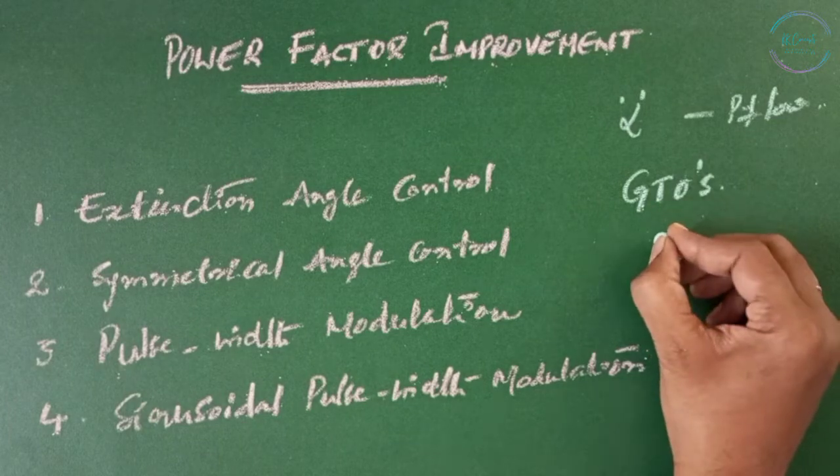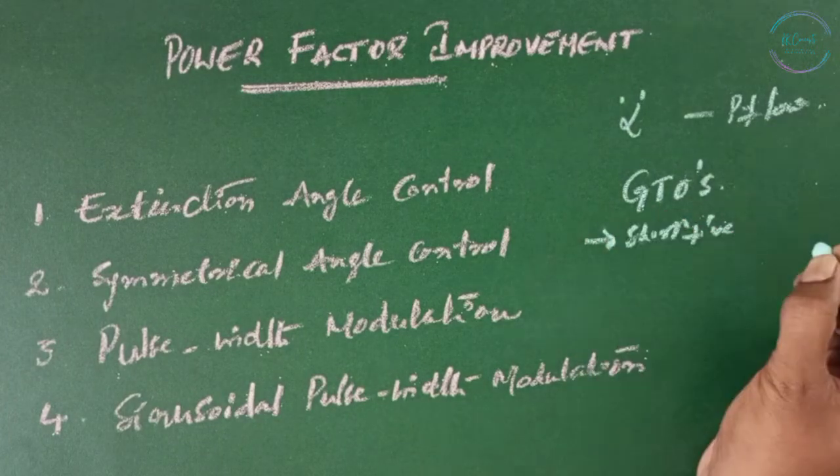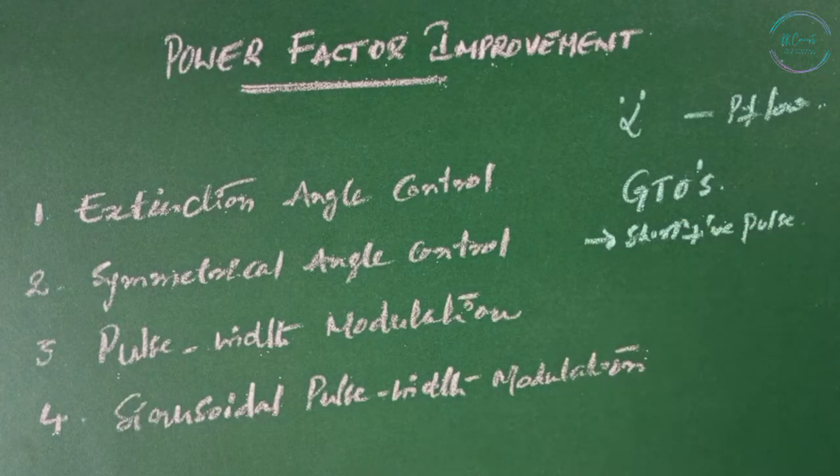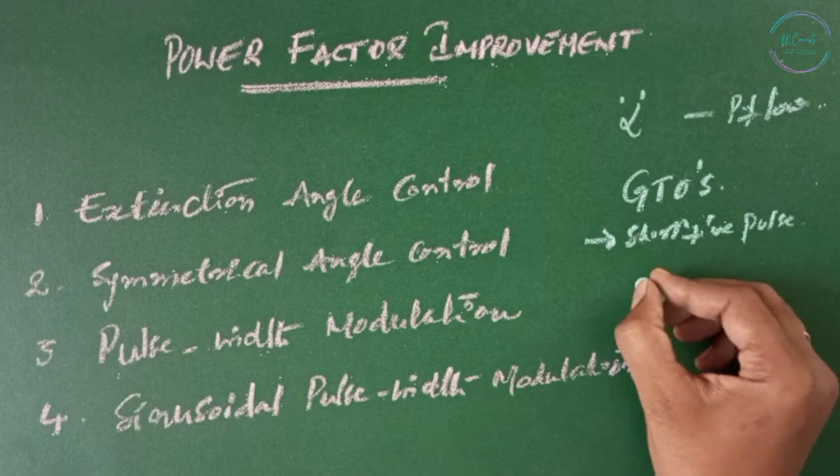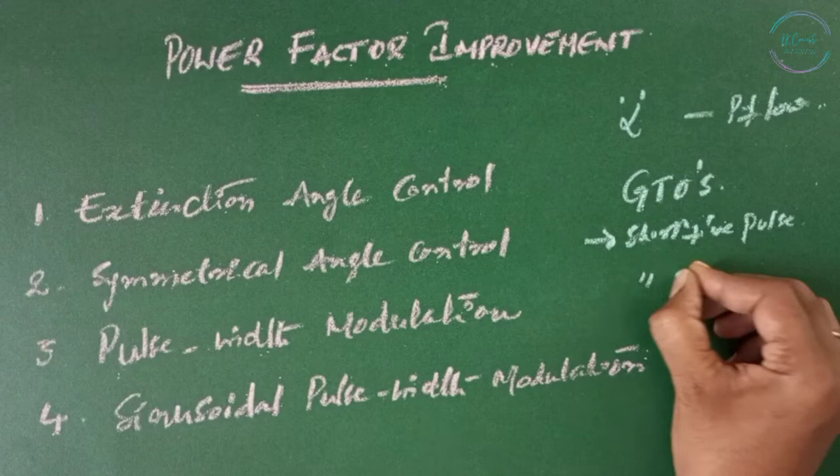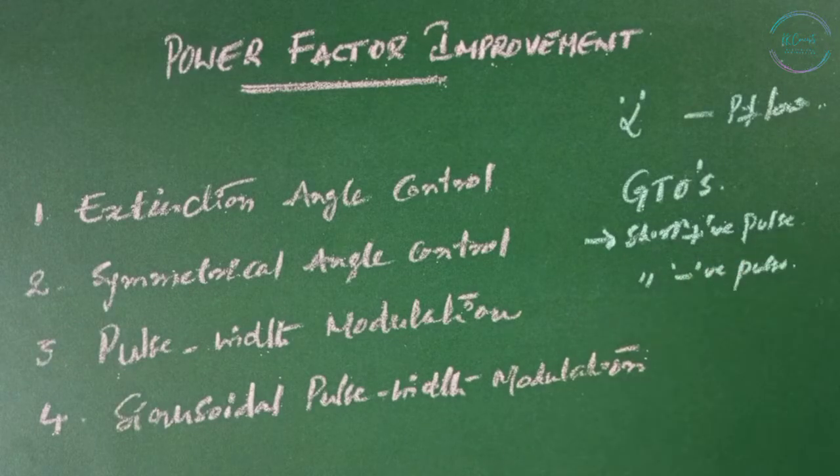GTOs can turn on by giving a short positive pulse to its gate, as in the case of a thyristor, and can turn off by giving a short negative pulse to its gate.